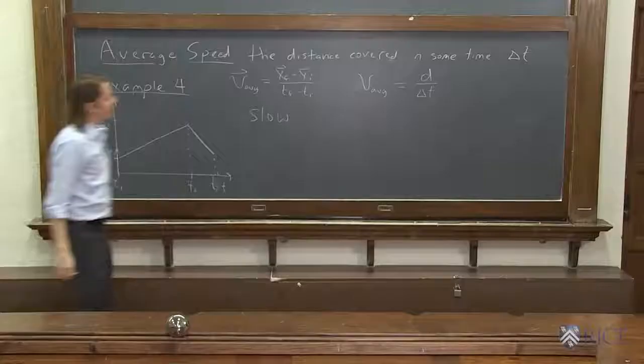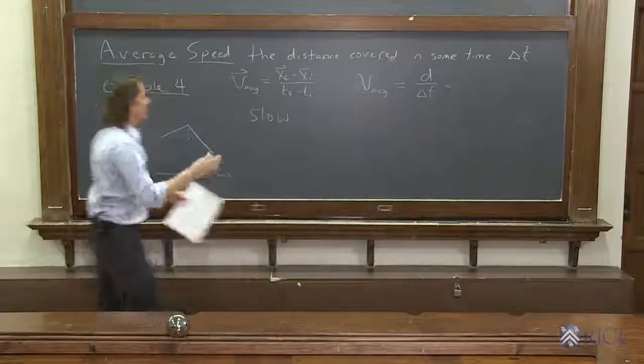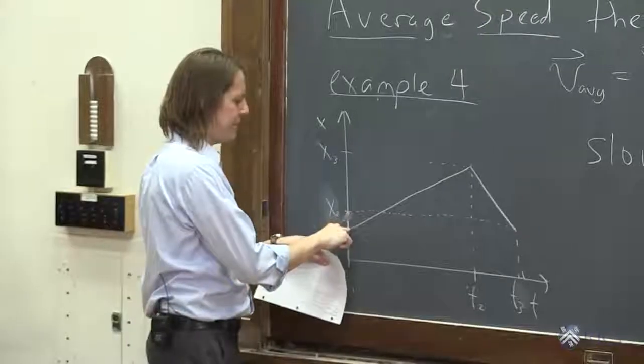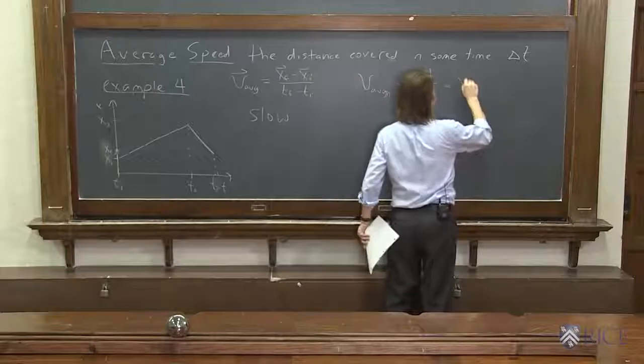All right, so then we would say, okay, in this case, how do we get this distance? How far did it go? First, he went from x1 all the way to x3. All right, x3 minus x1.